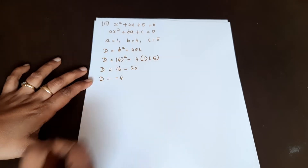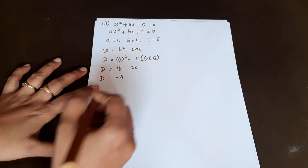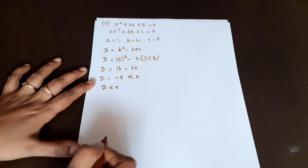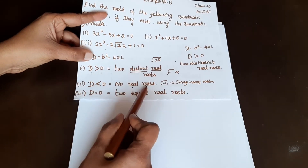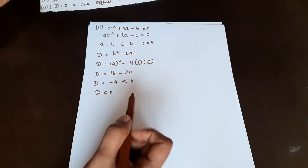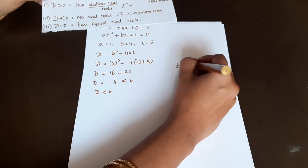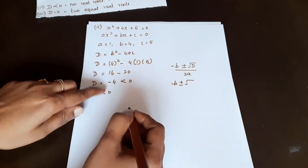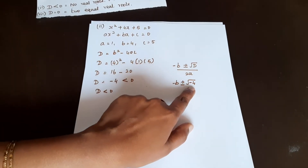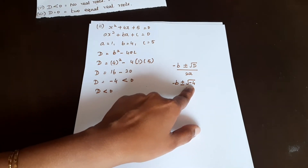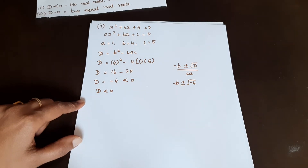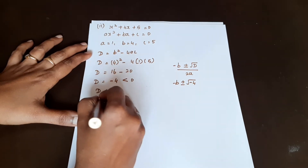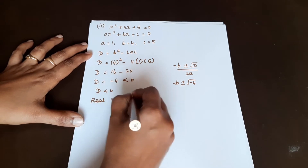4 times 5 is 20, so D is equal to 16 minus 20 equals minus 4. Since D is less than 0, we have no real roots. If D is less than 0, applying the quadratic formula gives a negative value under the root, which gives imaginary roots. So real roots do not exist.